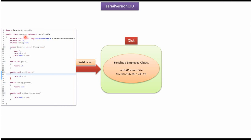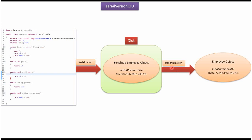Here I have defined an Employee class which implements the Serializable interface, so objects of the Employee class can be serialized and saved to disk. It contains a SerialVersionUID field. Using serialization, we can serialize the Employee object and save it to disk. Along with the serialized Employee object, the SerialVersionUID value will also be saved. Using deserialization, we can reconstruct the Employee object from the disk. While reconstructing, JVM will check if the SerialVersionUID on disk is the same as the SerialVersionUID in the Employee class. If it is the same, then no problem will occur.